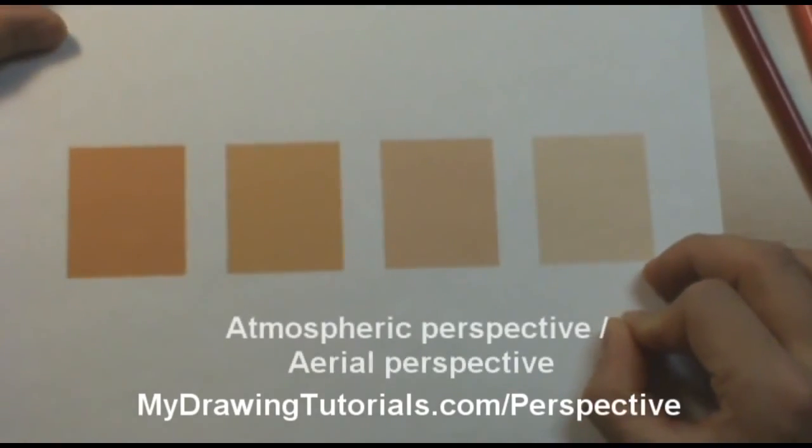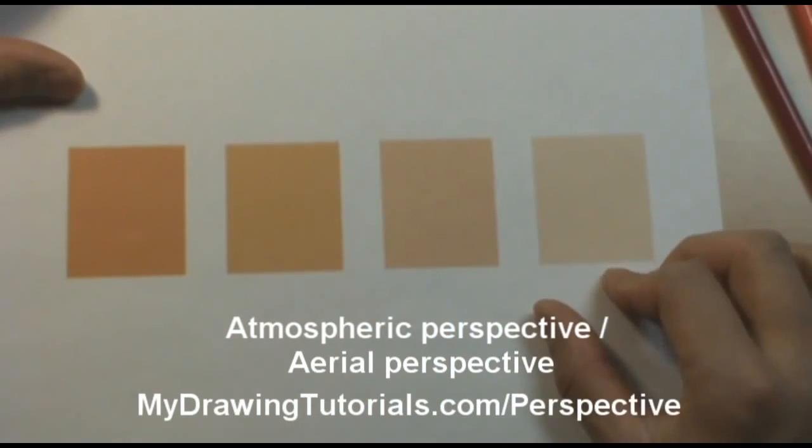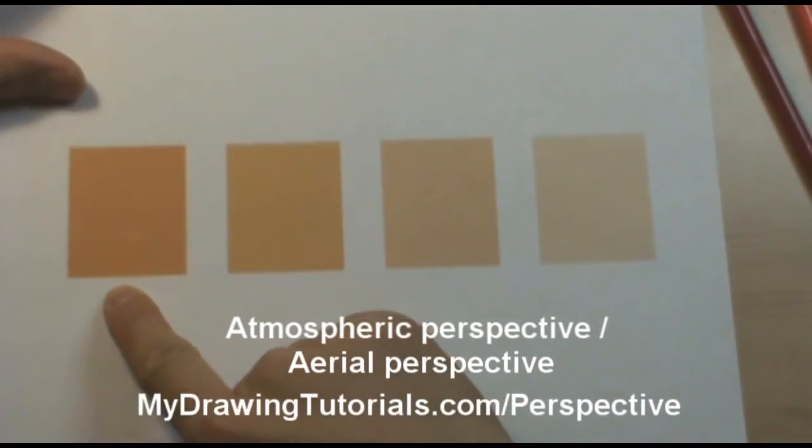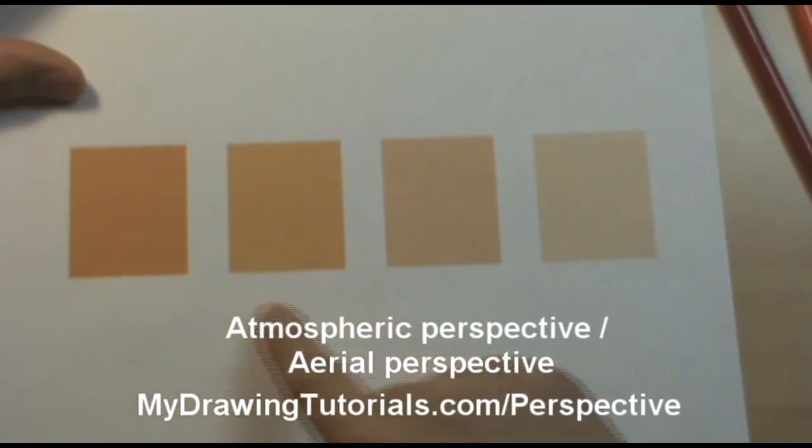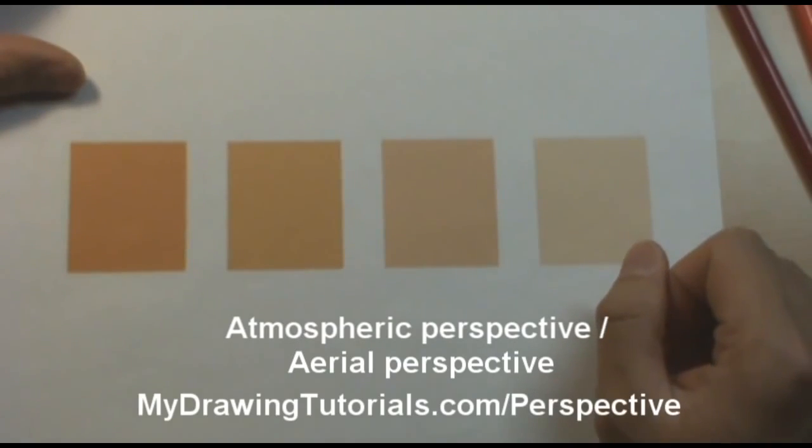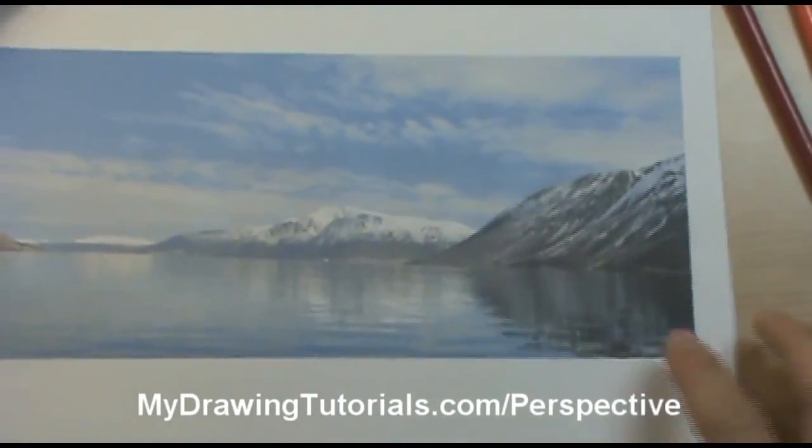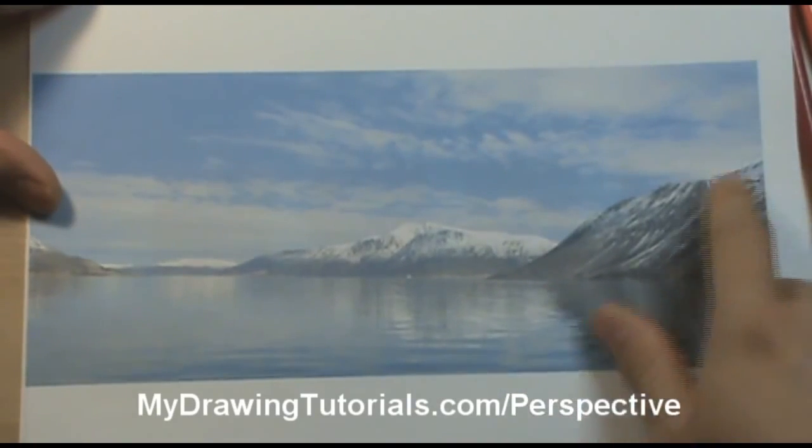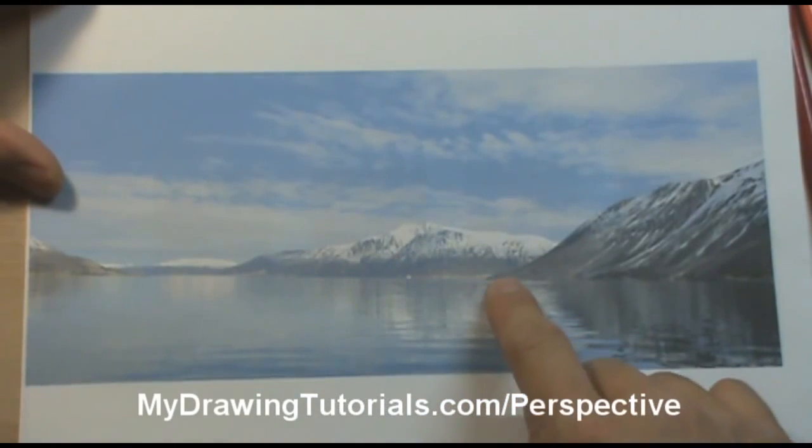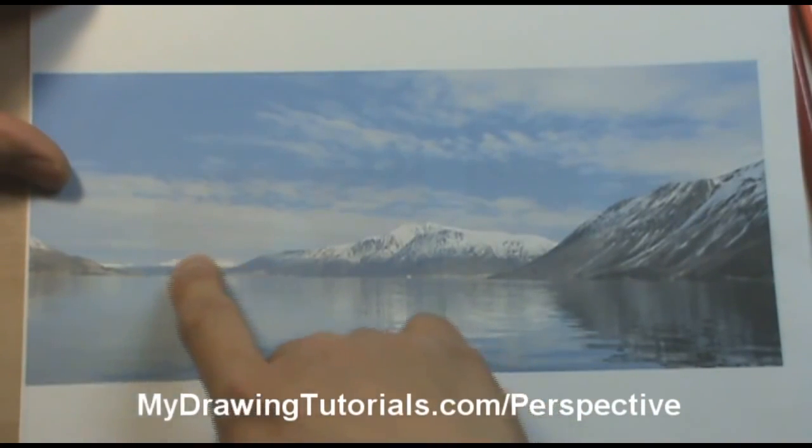So the next principle of depth has to do with manipulating the value and vividness of the color and it says that the darker and more vivid an object is, like this square right here, the closer it will appear to us. And the lighter and more faded and non-detailed an object is, the further away it looks. In painting this principle is called aerial perspective or atmospheric perspective and you can actually see it at work in this photograph right here. So this mountain here which is the closest to us looks very dark and vivid and clear, whereas as you move further you can see this mountain is much more faded, the colors aren't as clear, and then as you move further away the color becomes even lighter and faded.